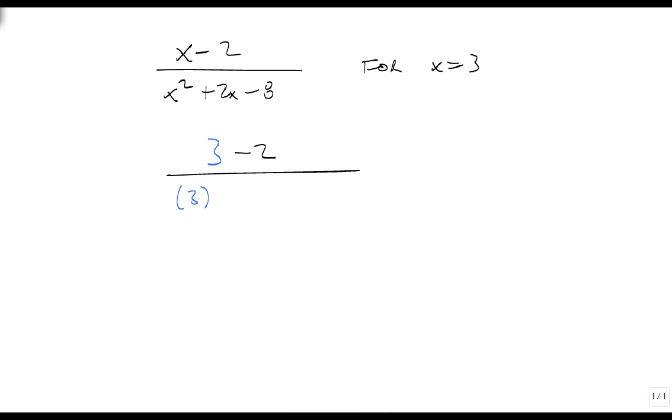So now I get 3 squared plus 2 times 3 minus 8. 3 minus 2 is 1. 3 squared is 9. 2 times 3 is 6, minus 8. 15 minus 8 is 7.